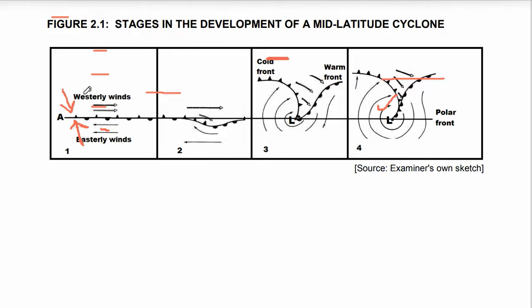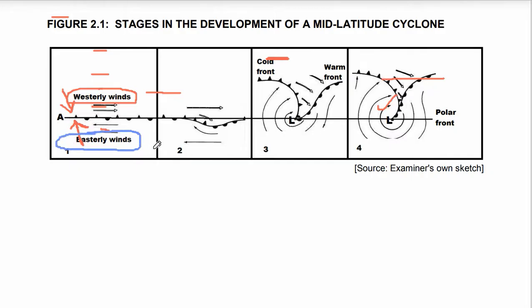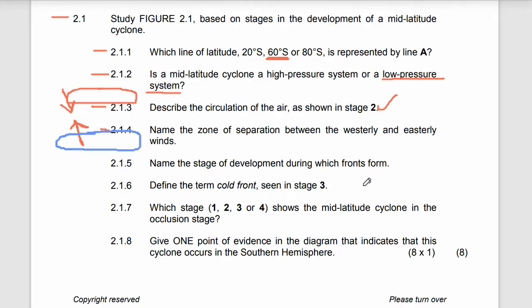The zone of separation. You can see that we have our westerly winds and we have our easterly winds underneath. So the zone that is between these two types of winds — two different air masses — is a polar front. That zone is a polar front that separates them. So it's a polar front.